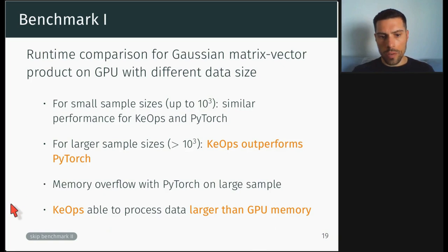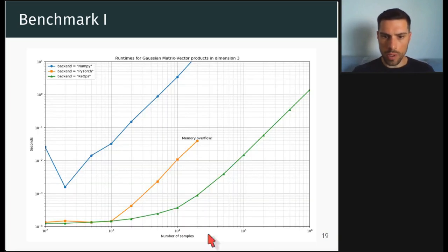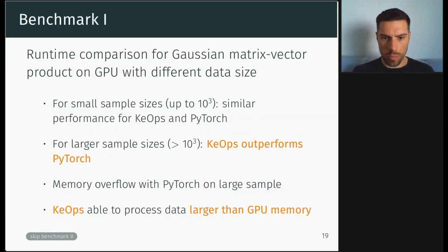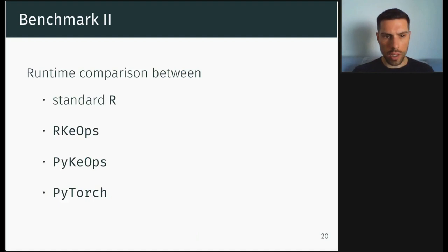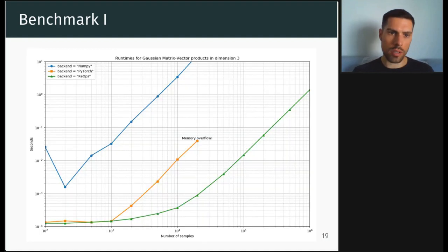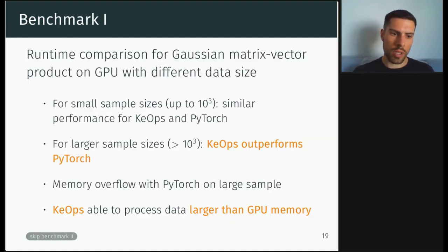And you have a memory overflow with PyTorch on large sample, so it stops here, where the data does not fit anymore in the GPU memory. But with KeOps, you can process larger data than GPU memory. I also have another benchmark that is available in the slides, and you can check online.